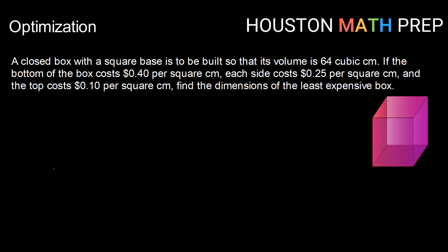A closed box with a square base is to be built so that its volume is 64 cubic centimeters. If the bottom of the box costs 40 cents per square centimeter, each side costs 25 cents per square centimeter, and the top costs 10 cents per square centimeter, find the dimensions of the least expensive box.